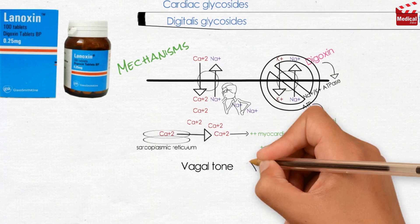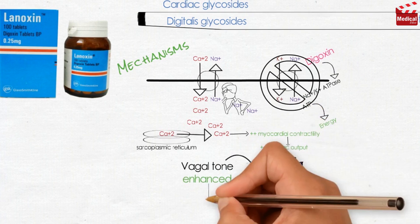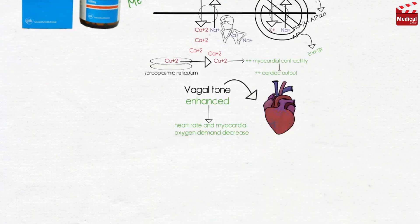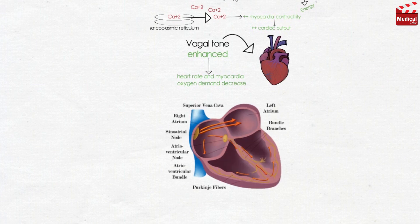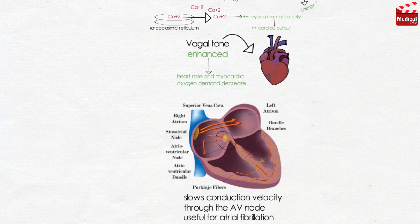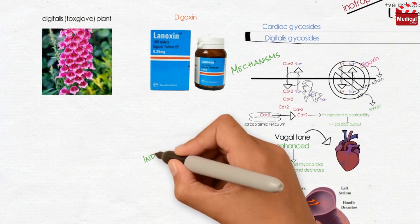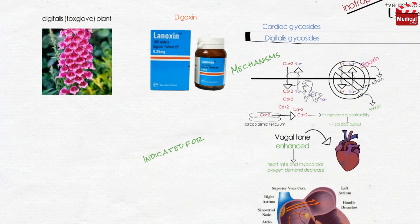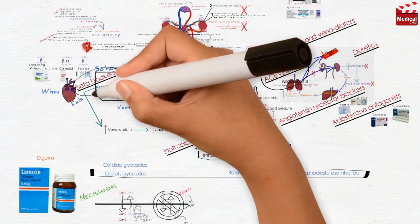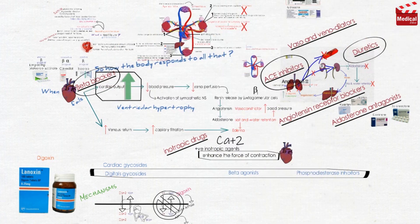Vagal tone is also enhanced, so both heart rate and myocardial oxygen demand decrease. Digoxin slows conduction velocity through the AV node, making it useful for atrial fibrillation. Digoxin therapy is indicated in patients with severe heart failure with reduced ejection fraction, after initiation of ACE inhibitor, beta blocker, and diuretic therapy.